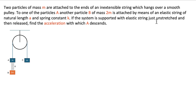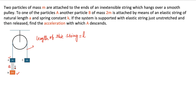Let's read out the problem — it's a little different from the problems you may have seen before. Two particles of mass m are attached to the ends of an inextensible string which hangs over a smooth pulley. Let's say the length of this string is l. One of the particles is A; another particle B of mass 2m is attached by means of an elastic string of natural length a and spring constant k.